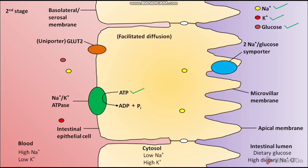The K+ ions present in the blood are transported through non-gated K+ channels, which are not shown here. Due to the transport of K+ ions from blood to the cytosol of the intestinal epithelial cell, a negative membrane potential is generated inside the plasma membrane. Both the Na+ concentration gradient and the negative membrane potential are used for the uptake of glucose from the intestinal lumen by the 2 Na+/glucose symporter.